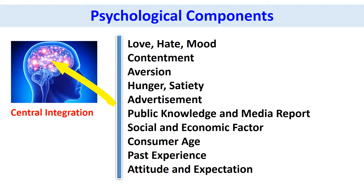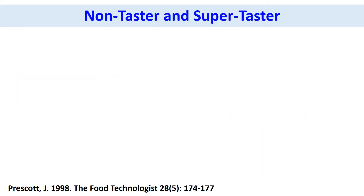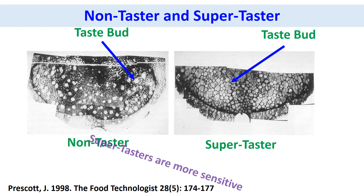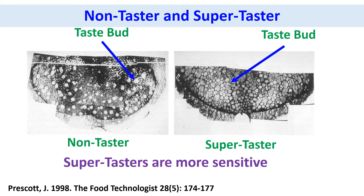However, hunger and satiety could have both physiological and psychological components. Sensory properties are complex, and I have included a few examples in this slide. Photographs of taste buds are shown for non-testers and super-testers. Super-testers are more sensitive than non-testers, therefore more salt and sugar need to be added to food products to increase saltiness and sweetness if products are targeted for non-testers. Sensory sensitivity also changes with age, gender, and physiological status — for example, women when they are pregnant.